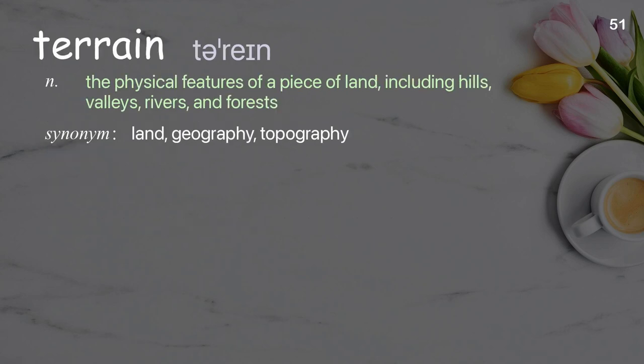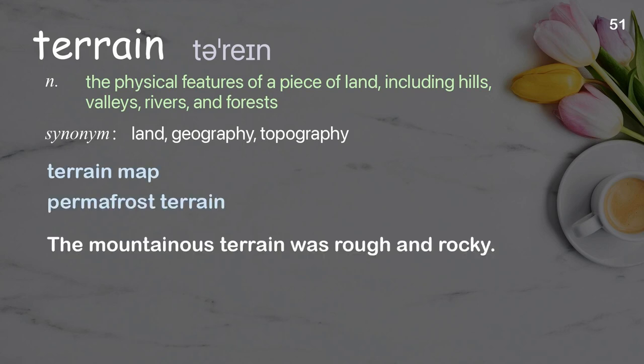Terrain: the physical features of a piece of land, including hills, valleys, rivers, and forests. Examples: terrain map; permafrost terrain. The mountainous terrain was rough and rocky.